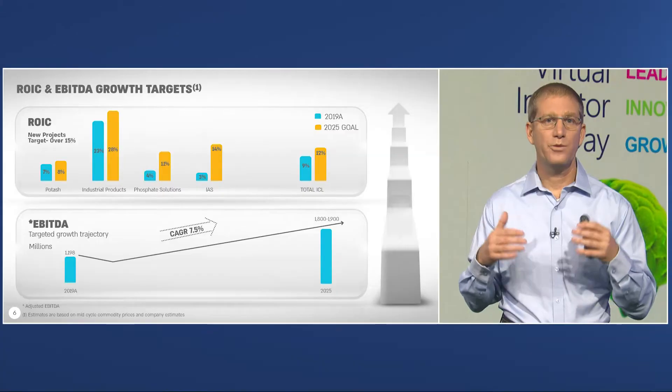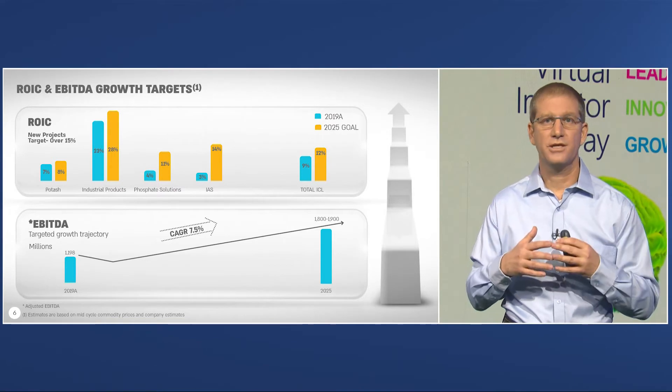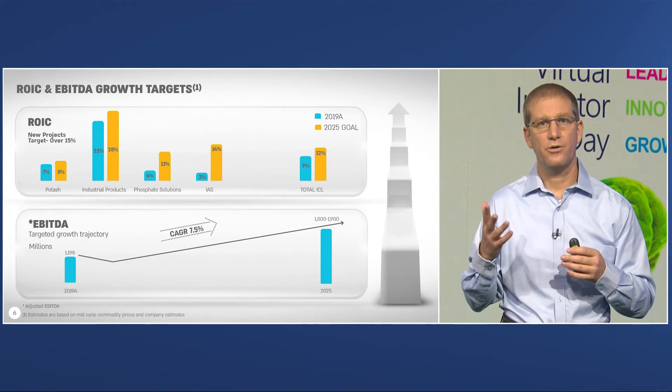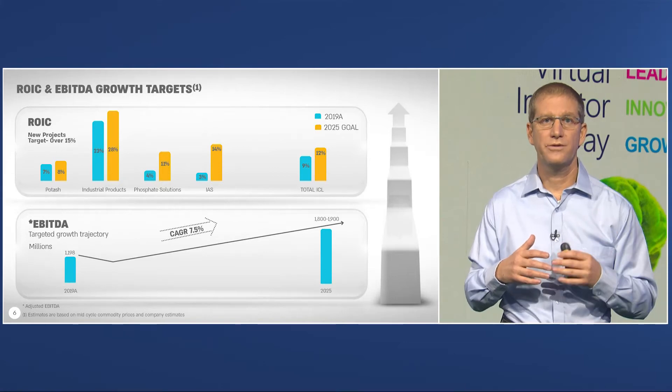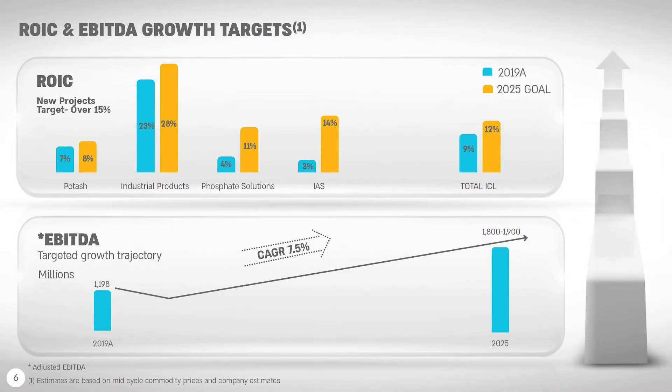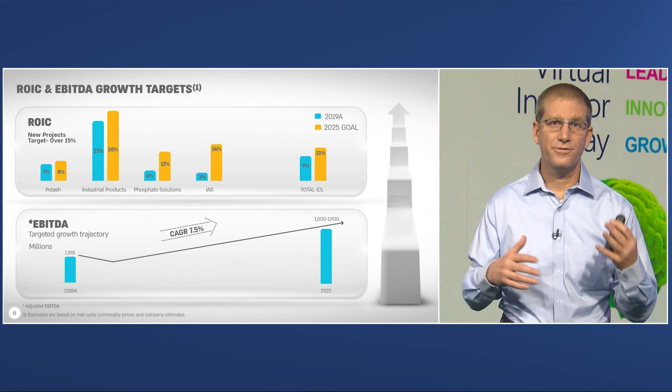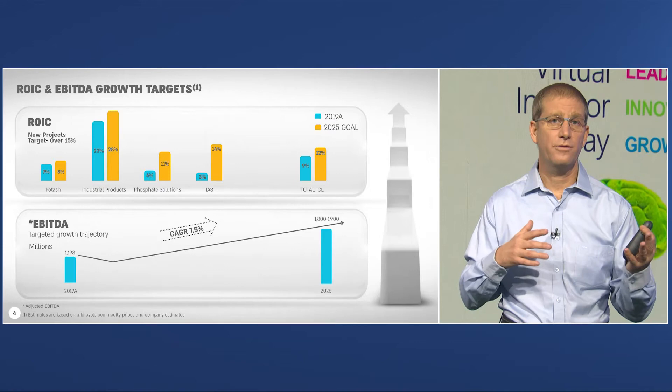Overall, ICL's target is to grow to double-digit ROI. When we are evaluating new projects, we are looking to get an ROI of over 15%. The bottom of the slide outlines our EBITDA growth projections that you also saw in Raviv's presentation. 2021 will be kind of a back-to-normal year, and all the way toward 2025 with over 50% increase in EBITDA.